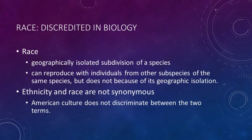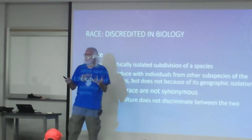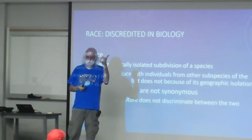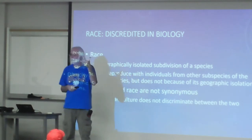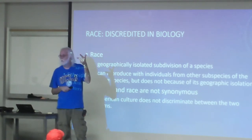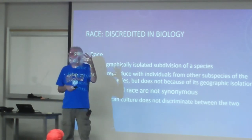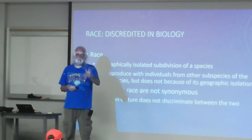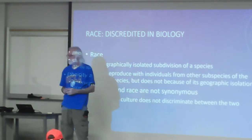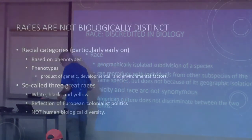Race as we currently define it is based on five phenotypical markers: skin color, hair color and texture, eye shape, and eye color. That's it. Think of all the things that make you who you are, and those five things are what the modern world uses to categorize people — completely stupid and superficial.